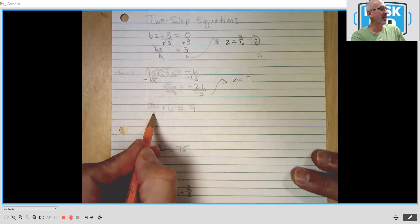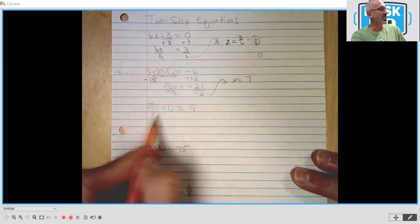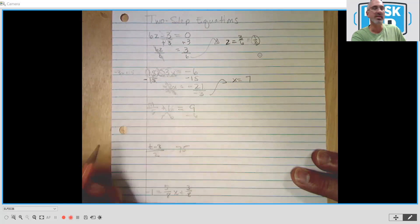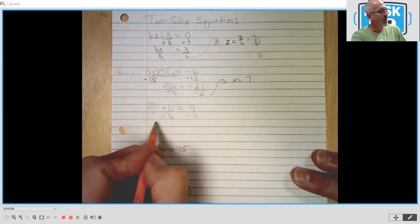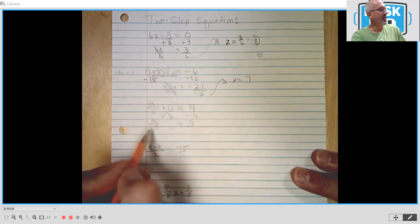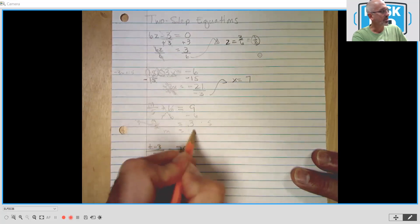The next one. m divided by 5 plus 6 equals 9. So we've got a division and we've got addition. So we're going to get rid of this addition first. So we're going to subtract 6 from both sides. The 6s drop off here. We're left with m divided by 5. And then 9 minus 6 is 3. In order to get rid of the division, we're going to multiply this side by 5 and this side by 5. This drops off. We're left with m equals 15.